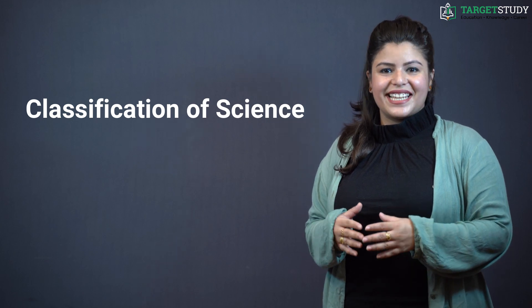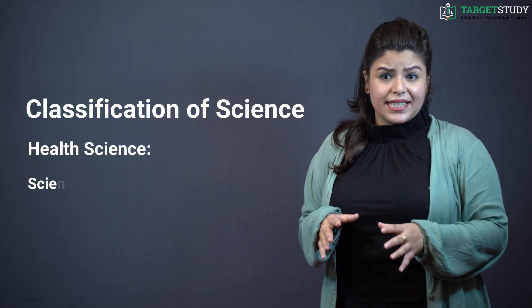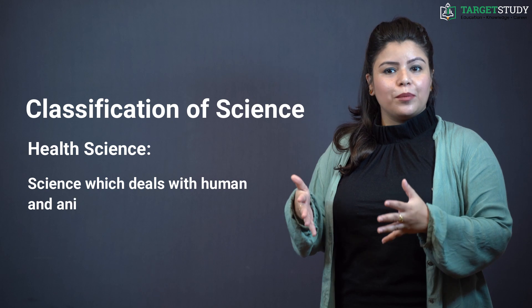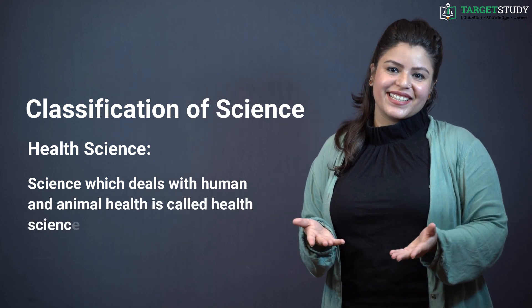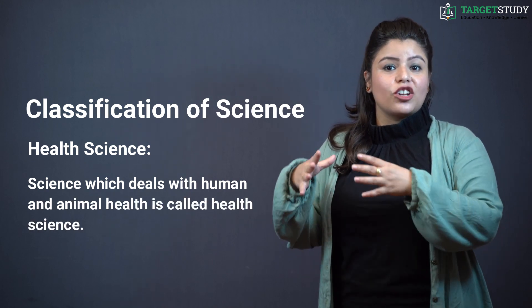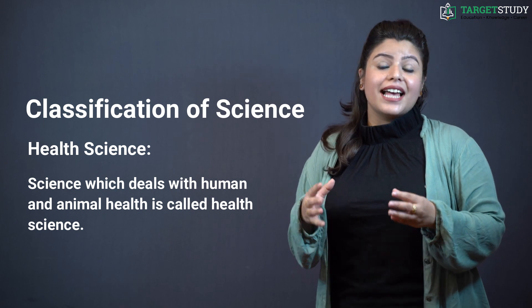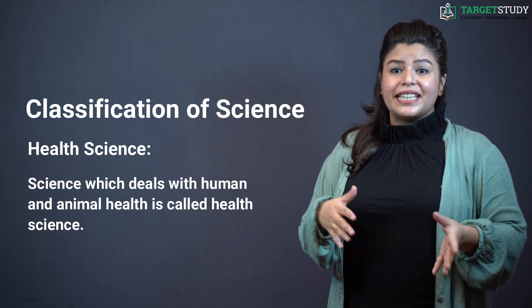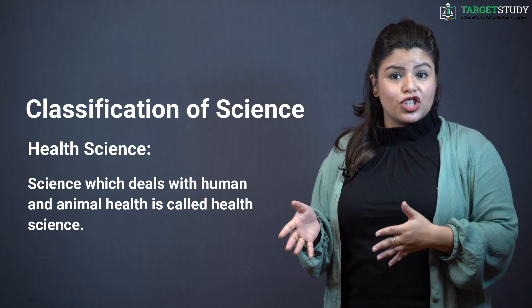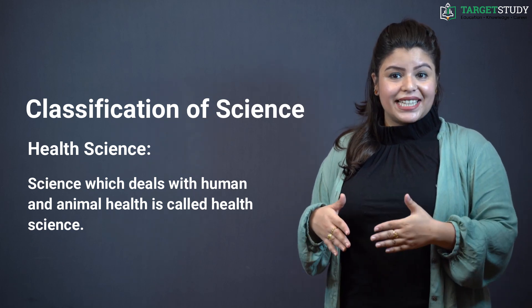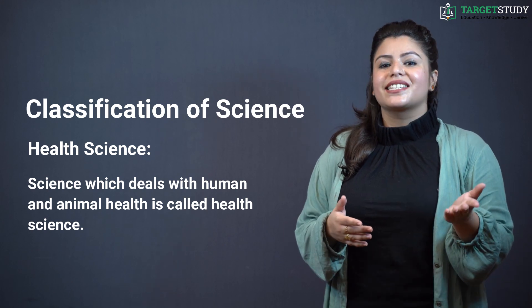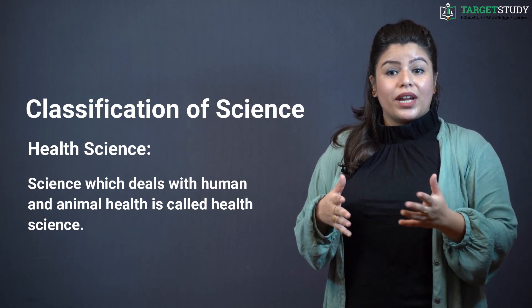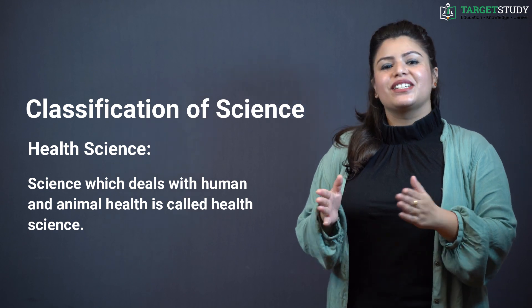The last one of its branches is health sciences. Science which deals with human and animal health is called health science. Its main focus is on health or healthcare as core parts of the subject matter. The science fields like bioengineering, dentistry, epidemiology, healthcare, medicine, nursing, pharmacy, social work, veterinary medicine, etc. come under this category.